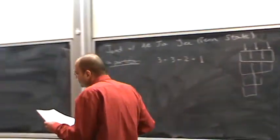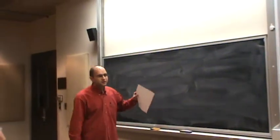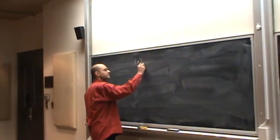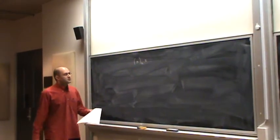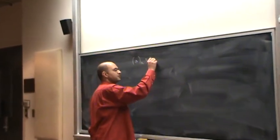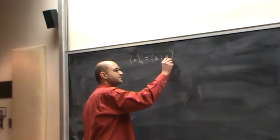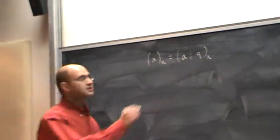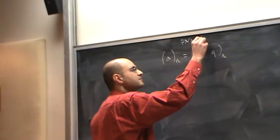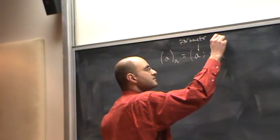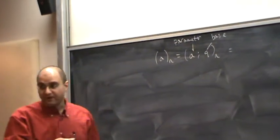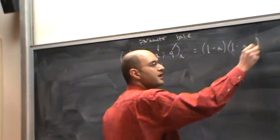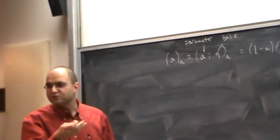We will talk about generating functions for partitions, which require heavy use of Q factorials. So let's define them. When we say a sub n, that's the short n for the longer version. a is called the parameter, Q is called the base. And this is a finite product. 1 minus a times 1 minus aq times 1 minus aq squared and so on.